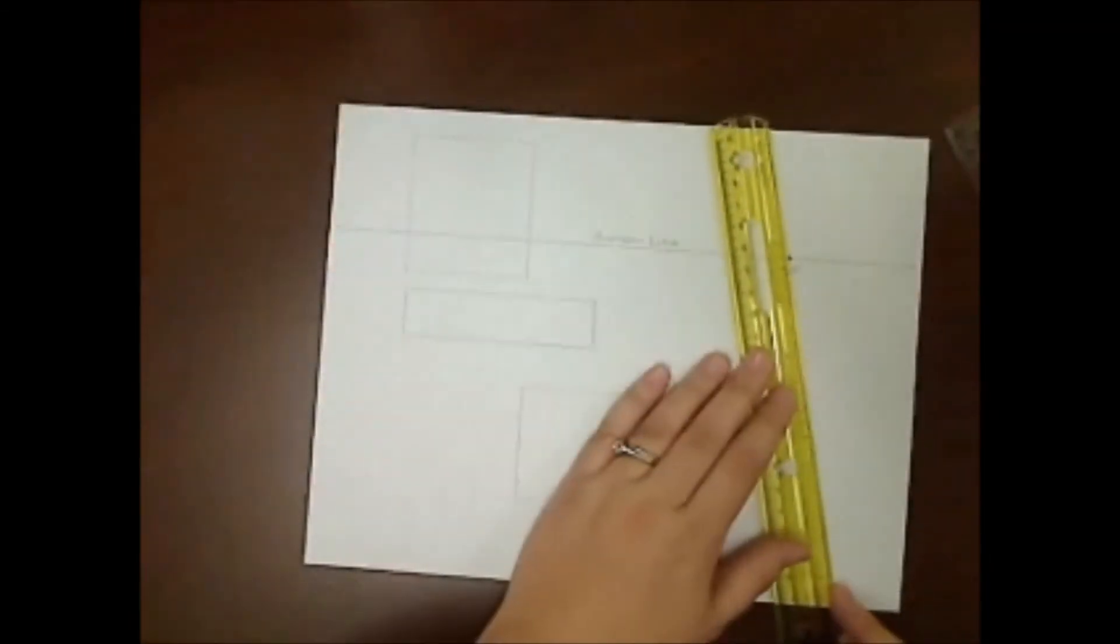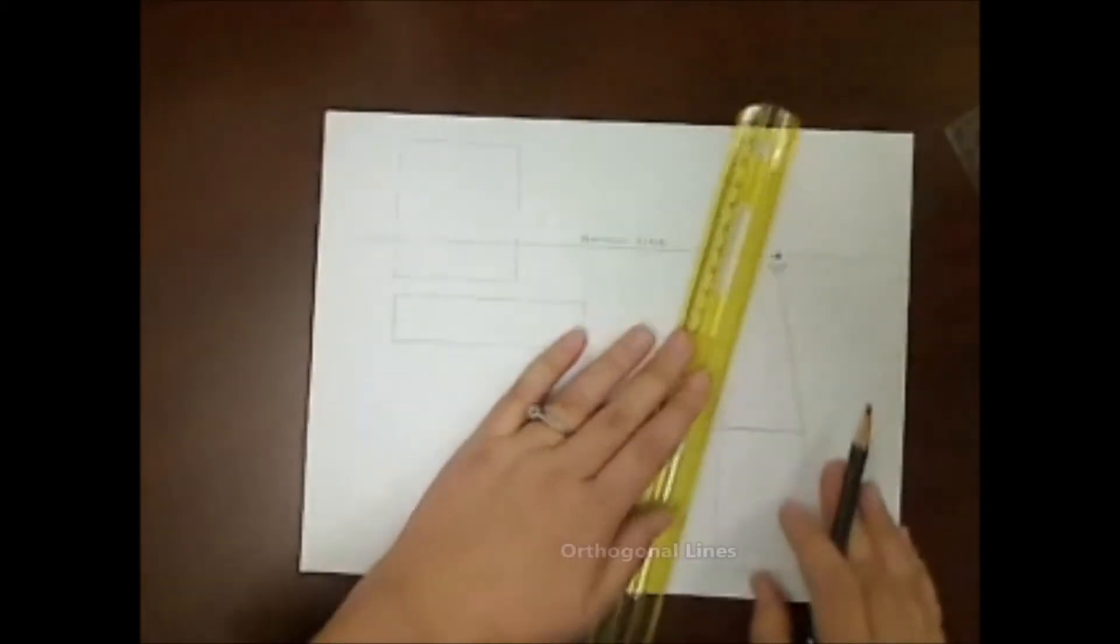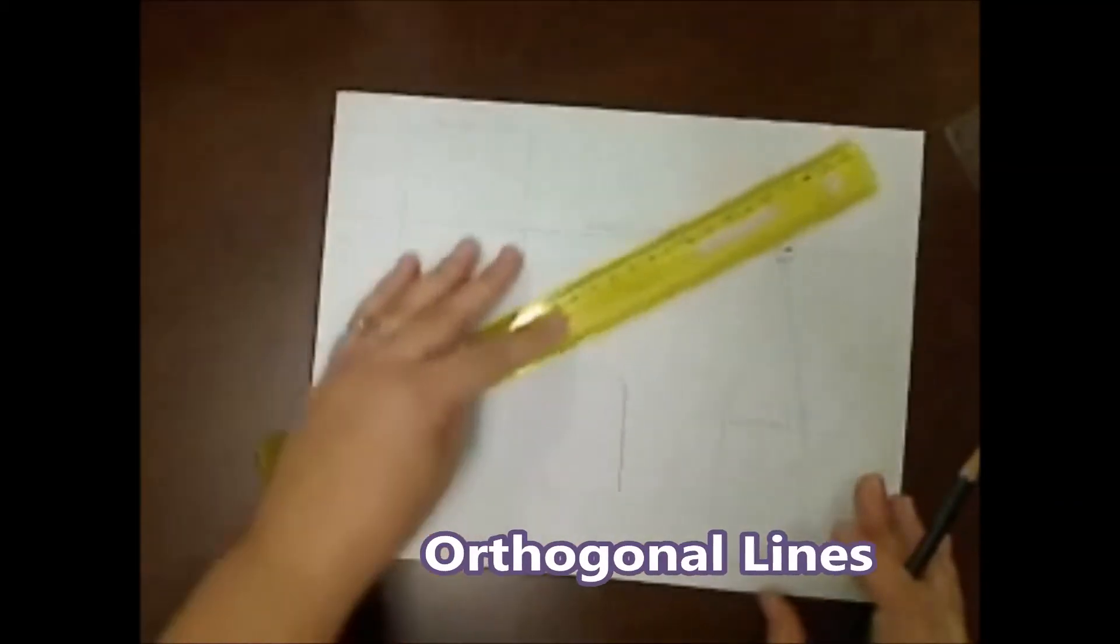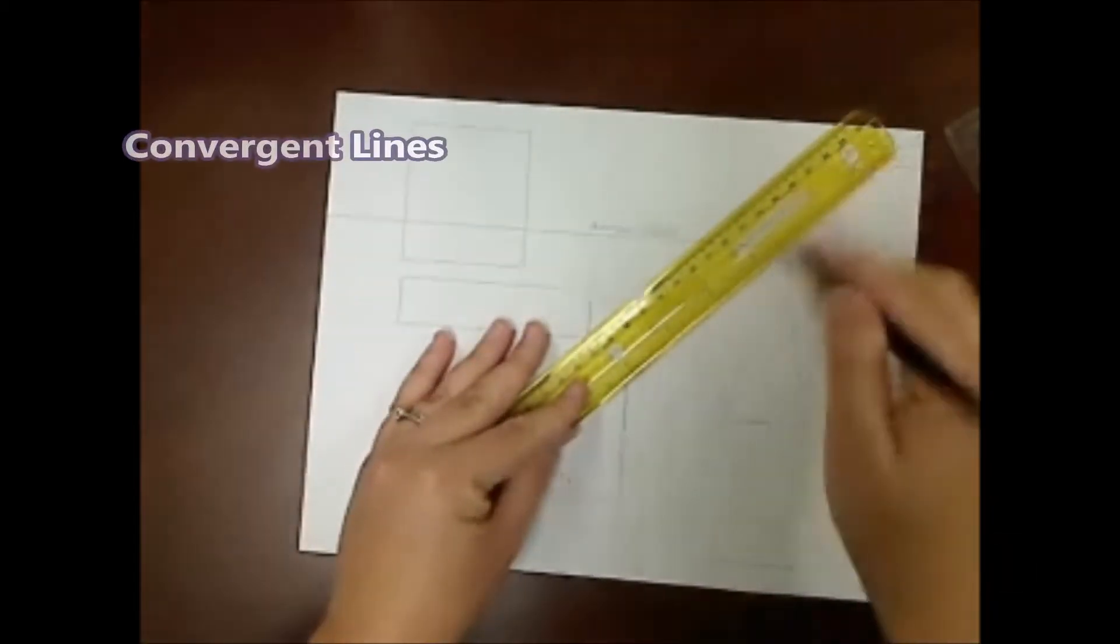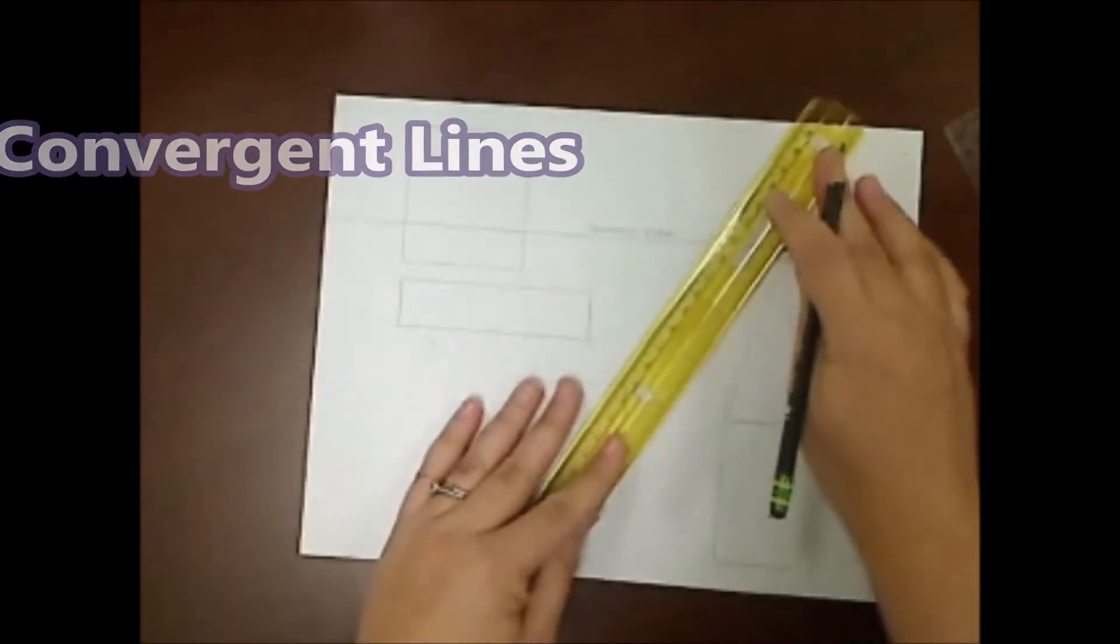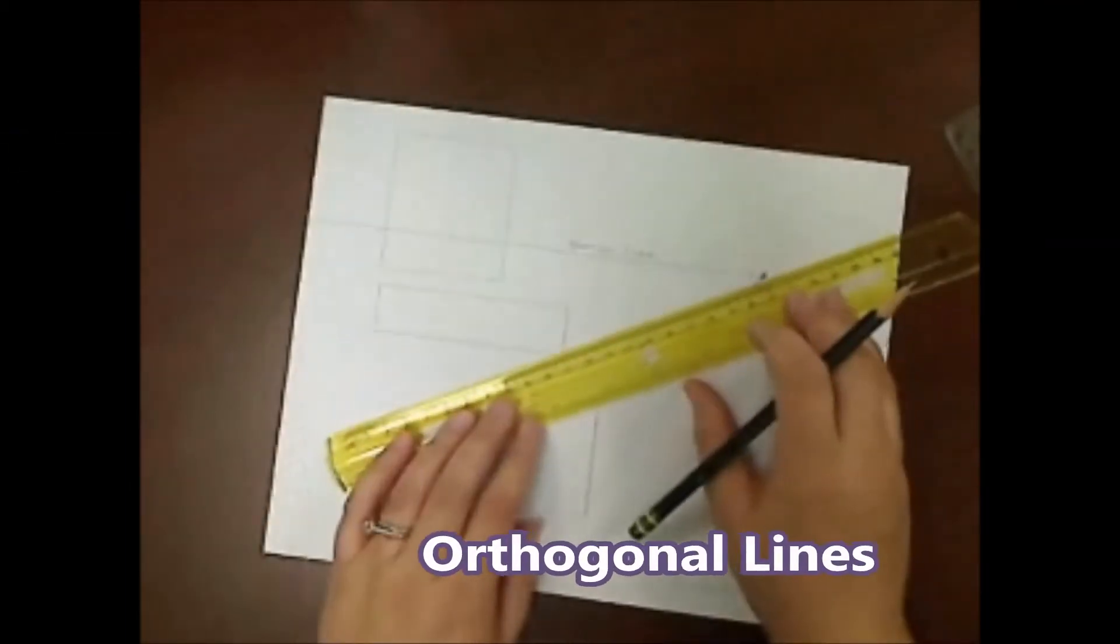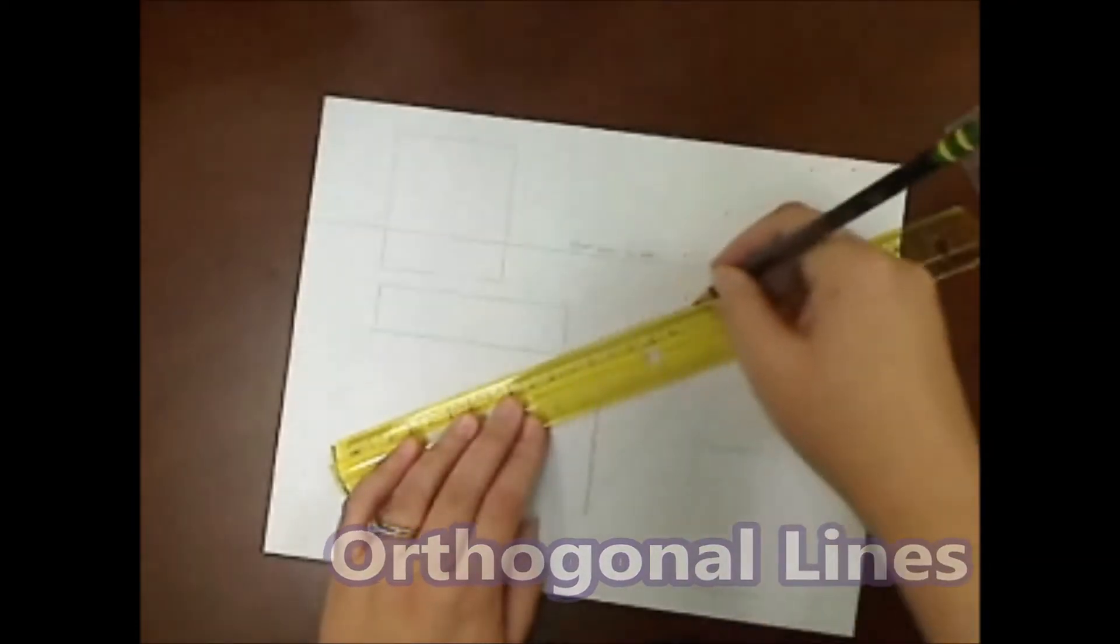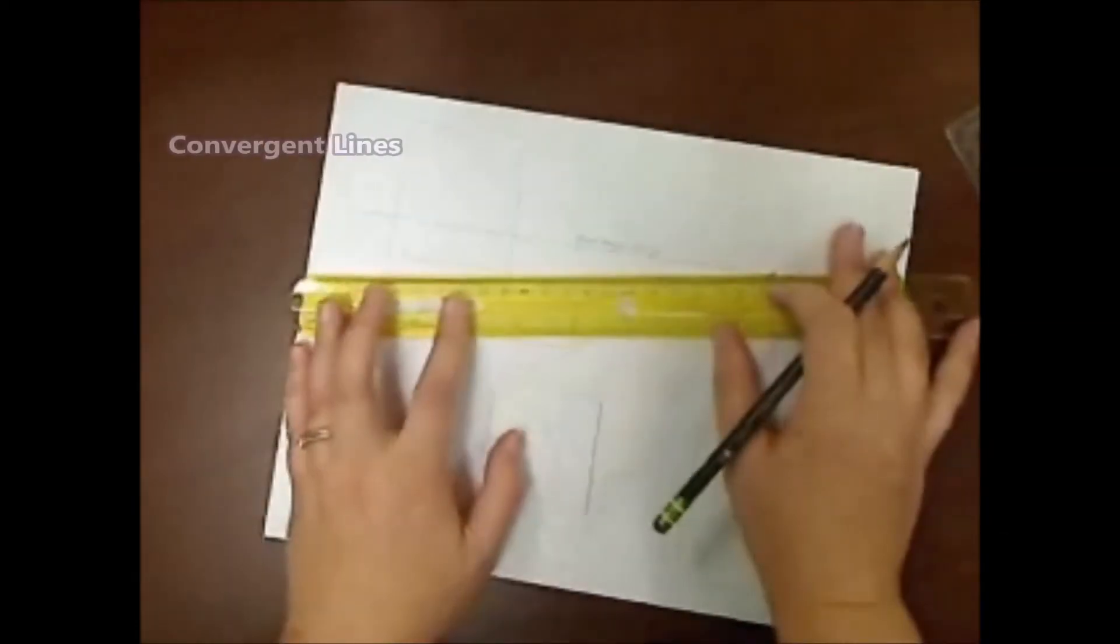Now that our boxes are done, we're going to create our orthogonal lines. These are the diagonal lines that converge on the vanishing point, otherwise known as convergent lines. These orthogonal lines will start at the corners of each object or the edges. They are what create the dimension or space.